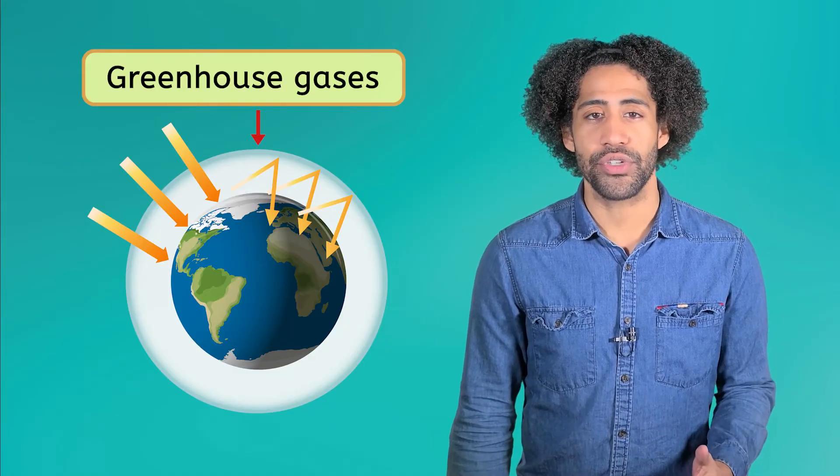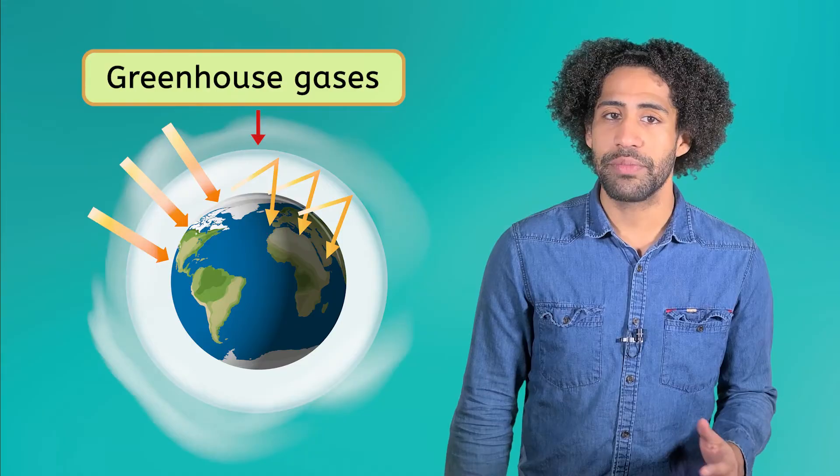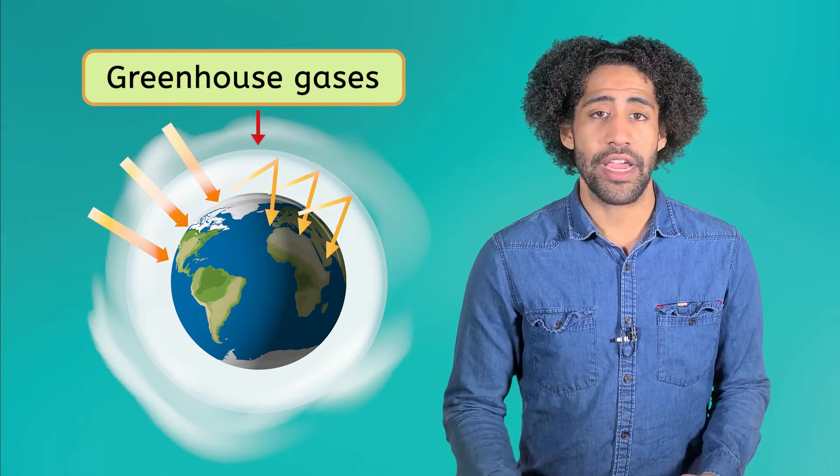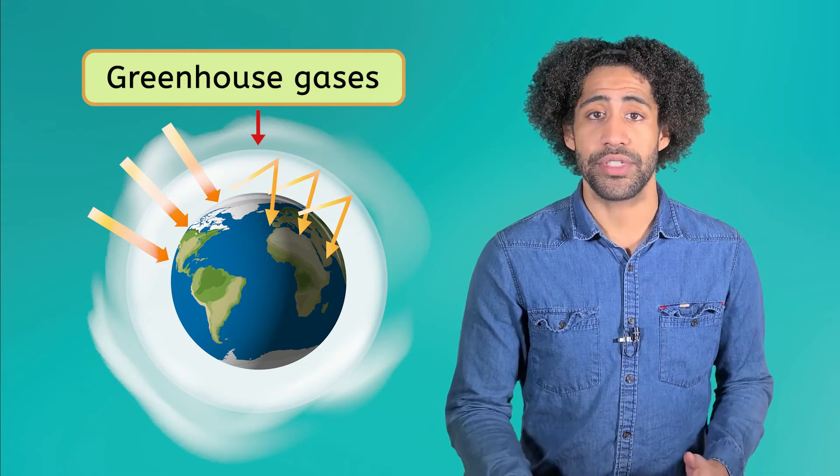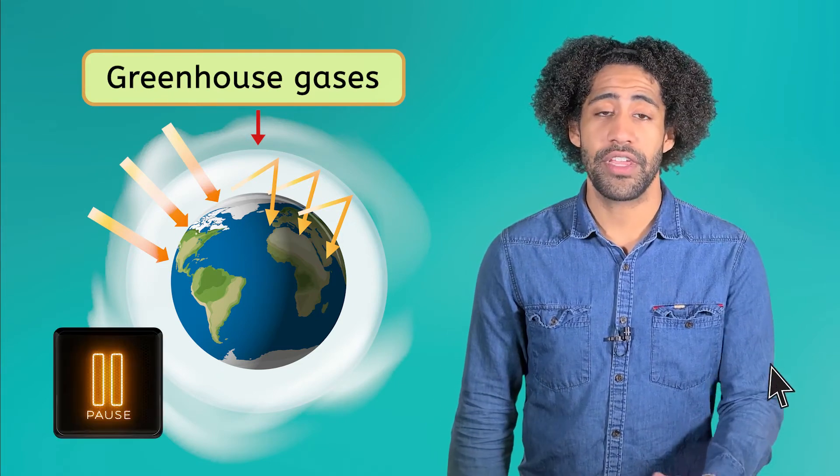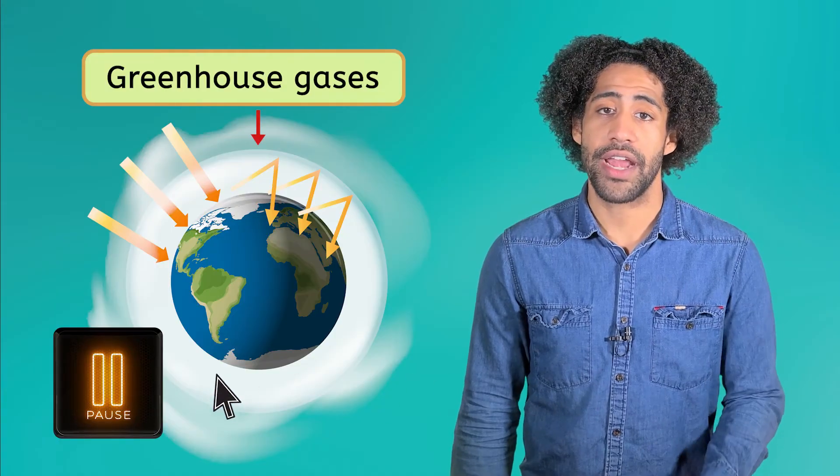The thing is, a lot of air pollution is made up of greenhouse gases, which is making this layer get thicker and thicker. If this layer of greenhouse gases continues to get thicker, what do you think might happen? Pause the video here and record your predictions in your guided notes.